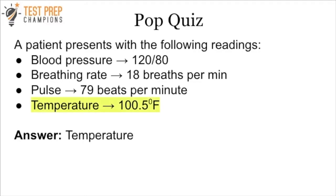The correct answer is the temperature. The normal blood pressure is about 120 over 80, the breathing rate for a healthy adult is 16 to 20 breaths per minute, and the pulse is 60 to 100 beats per minute — everything else looks like it's in the normal range. The temperature is abnormal; it's too high. Given that we don't know anything else about the patient, that's the one vital the doctor would be most concerned with.